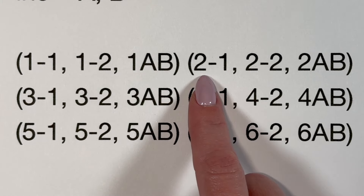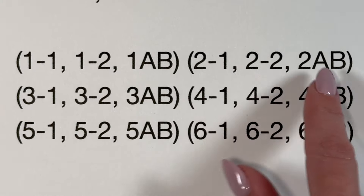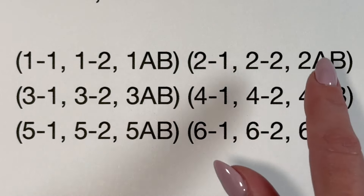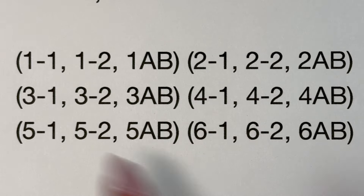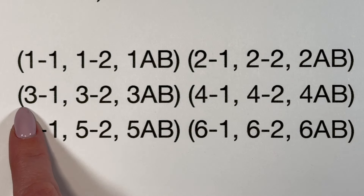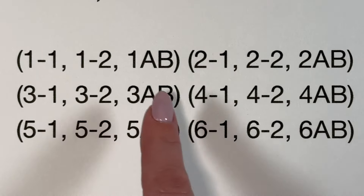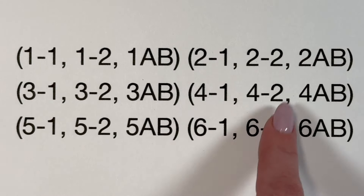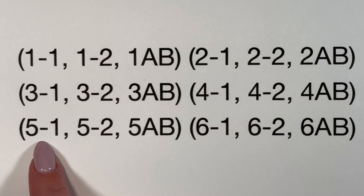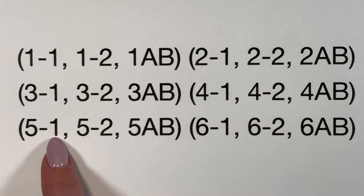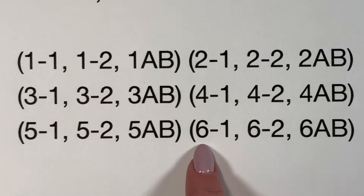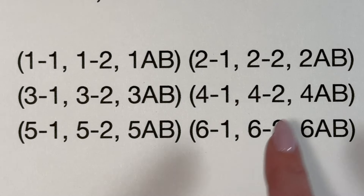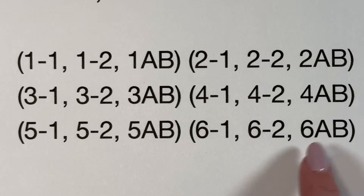For the second set I say '2 1, 2 2, 2 A, B' — second single crochet, second single crochet, second increase. Then set 3: '3 1, 3 2, 3 A, B.' Set 4: '4 1, 4 2, 4 A, B.' Set 5: '5 1, 5 2, 5 A, B.' And set 6: '6 1, 6 2, 6 A, B.'